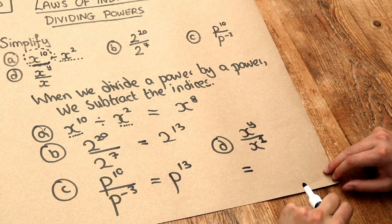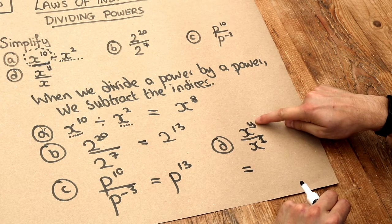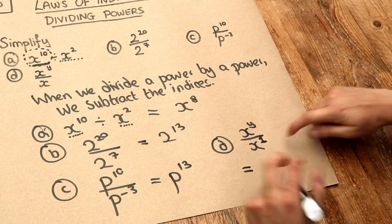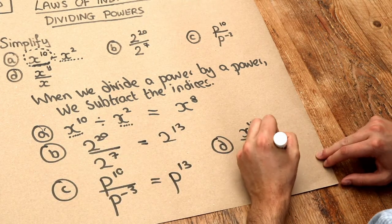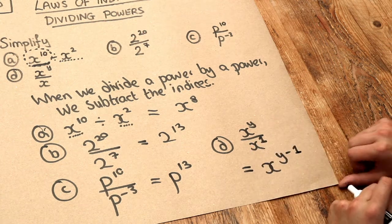We're dividing two powers, so we subtract the indices: y minus 1, which doesn't simplify. That's the answer. Thank you.